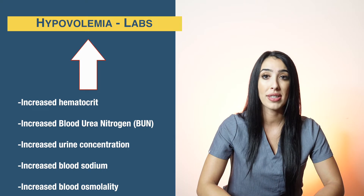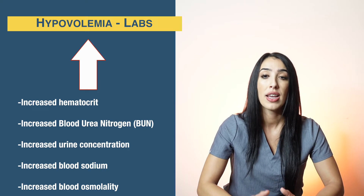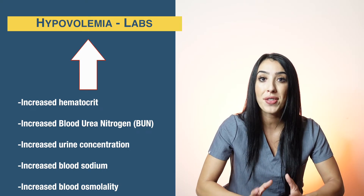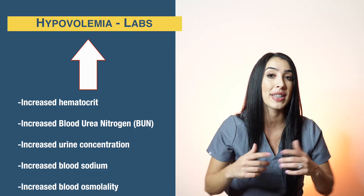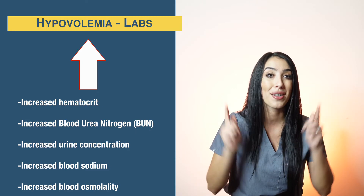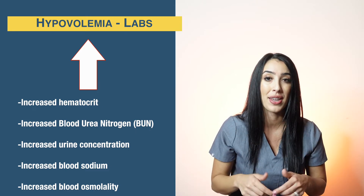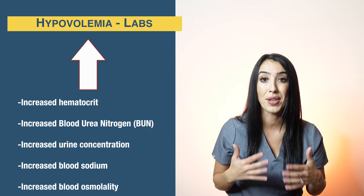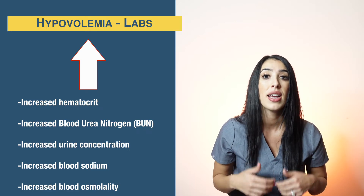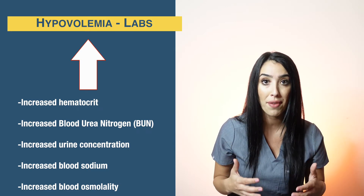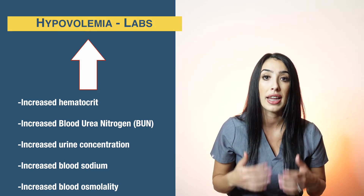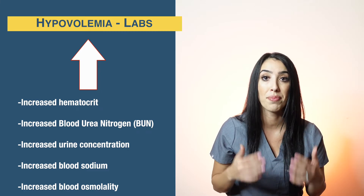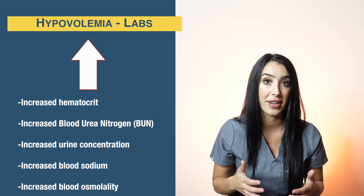Labs in hypovolemia: think that everything is going to go up because the blood will be more concentrated. You will see increased hematocrit, increased BUN, increased urine specific gravity, increased blood sodium, and increased blood osmolarity.